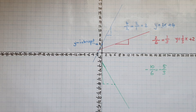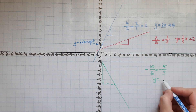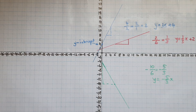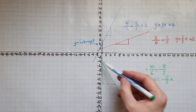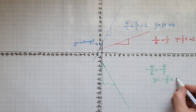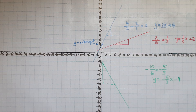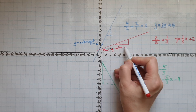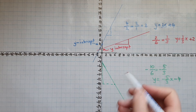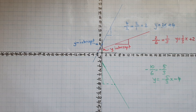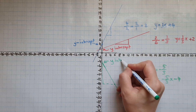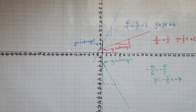For the green line that's y equals negative five thirds of x and that's minus 4. So this is the y-intercept for the red line and this is the y-intercept for the green line.